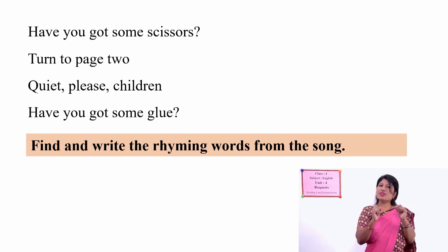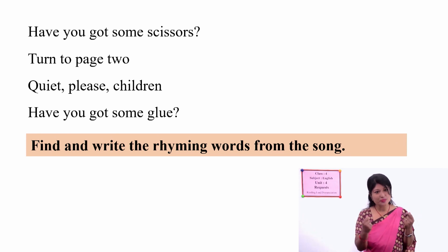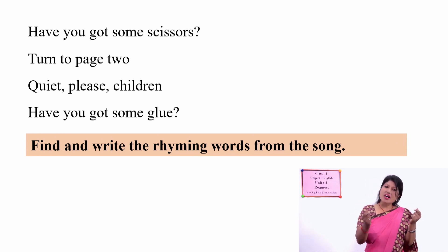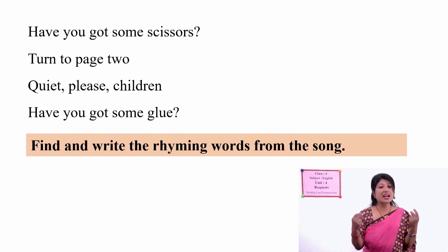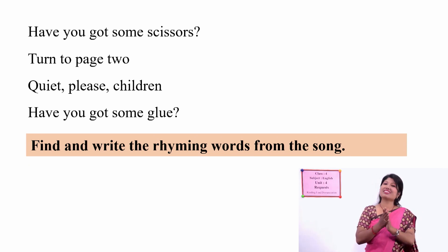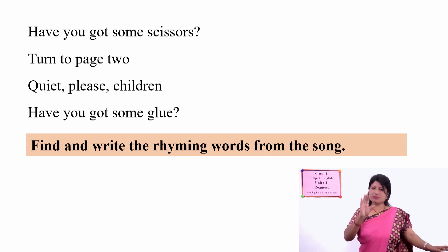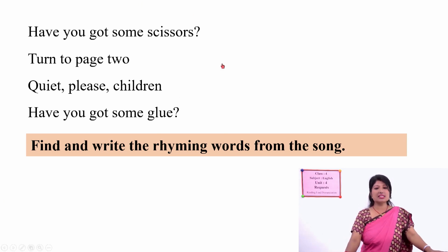'Have you got some scissors? Have you got some scissors? Turn to page two. Turn to page two. Quiet please children. Quiet please children. Have you got some glue? Have you got some glue? Thank you all of you.' So we have practiced this short chant. Now here is one instruction: Find and write the rhyming words from the song.